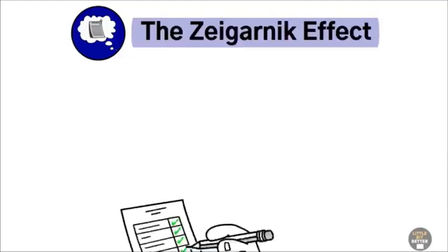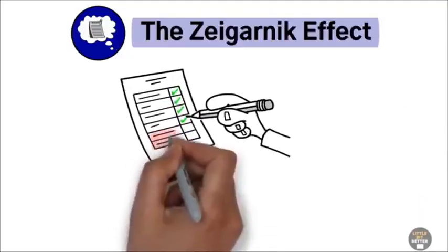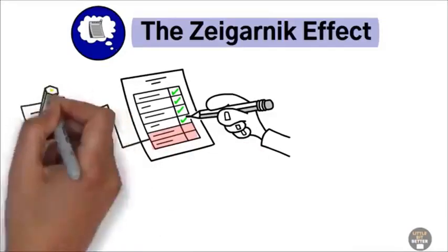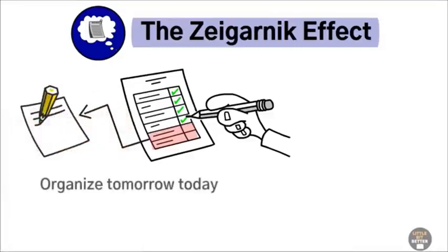The Zeigarnik effect. The Zeigarnik effect is when you remember uncompleted tasks better than completed ones. For example, constantly thinking about a report that you need to finish. To use this to your advantage, organize tomorrow, today.